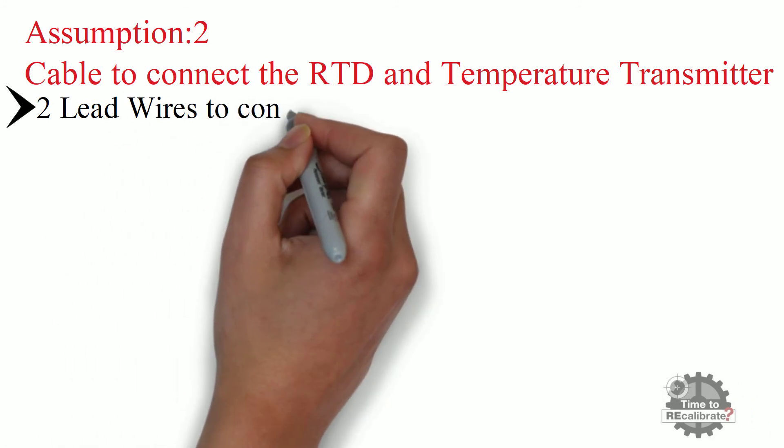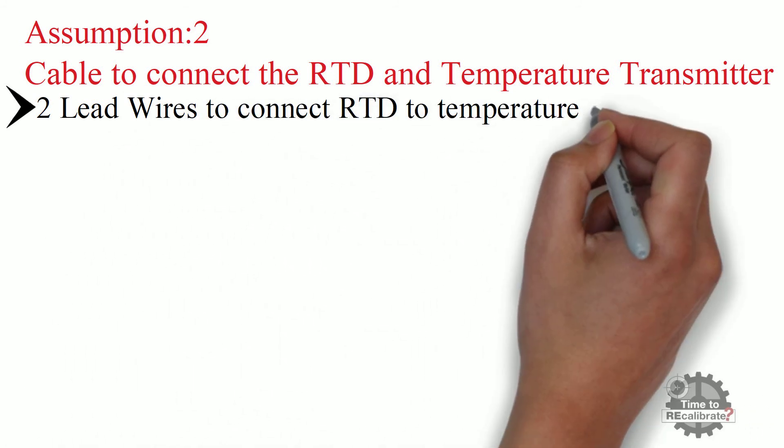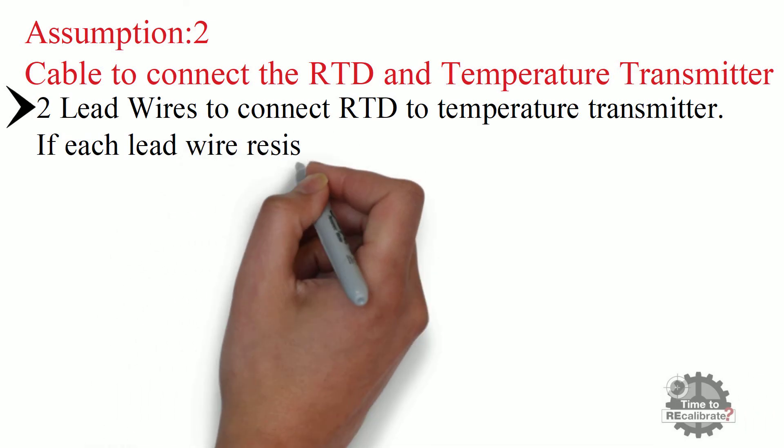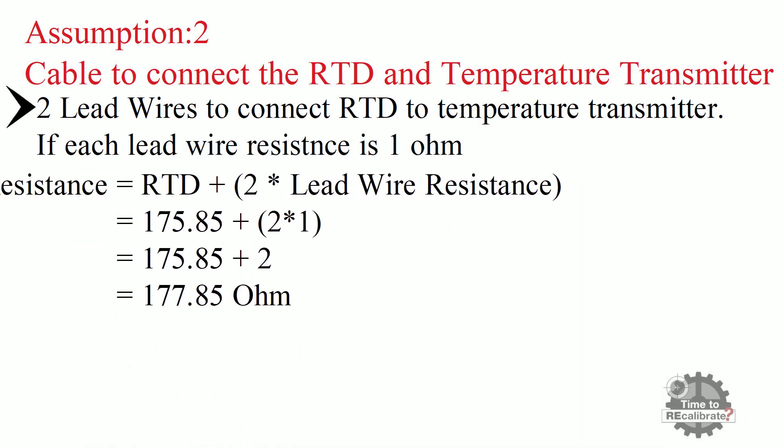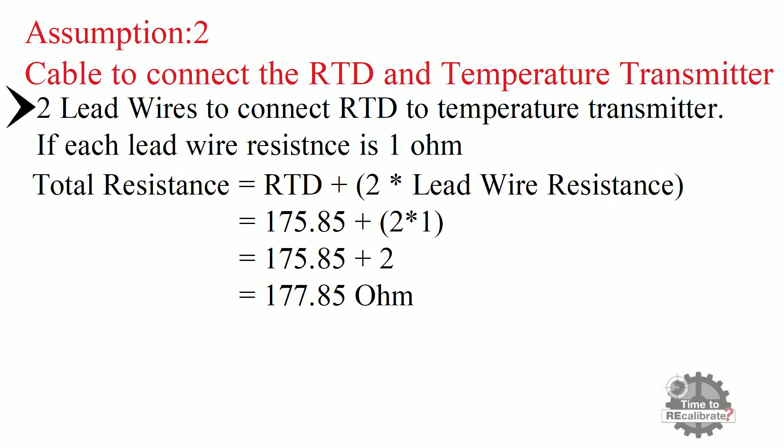For example, if we use two lead wires to connect RTD to temperature transmitter and if each lead wire resistance is 1 ohm, and if we put all these values in this equation, then we will get 177.85 ohm resistance value.